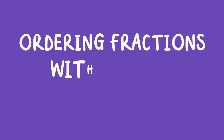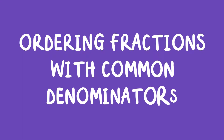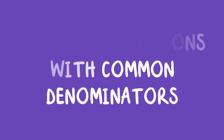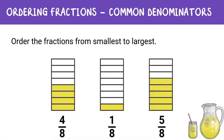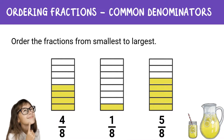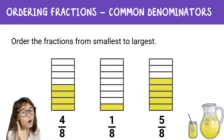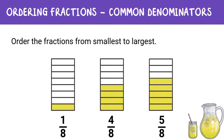Next, let's order fractions from smallest to largest. Since we are working with common denominators, simply compare the numerators to determine their order. Here's an example: 4 eighths, 1 eighth, and 5 eighths. Start with the smallest numerator and work your way up. When we order them from smallest to largest, we get 1 eighth, 4 eighths, and then 5 eighths. Did you get it right? Amazing!